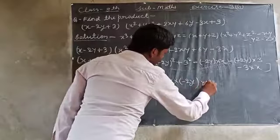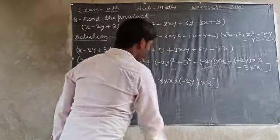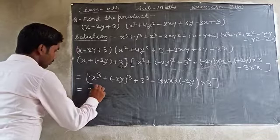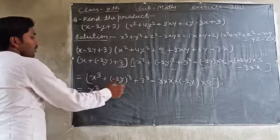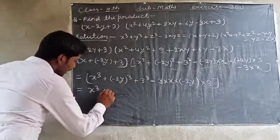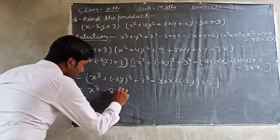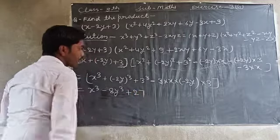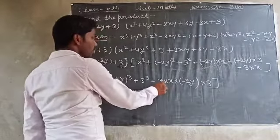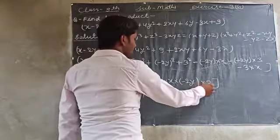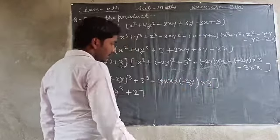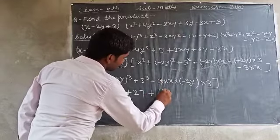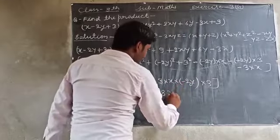Let us expand: x³, then (−2)³ = −8 so we get −8y³, and 3³ = 27. For the last term: 3 × 2 × 3 = 18 and the negatives cancel, giving +18xy. So the product is x³ − 8y³ + 27 + 18xy.